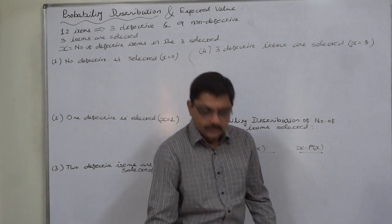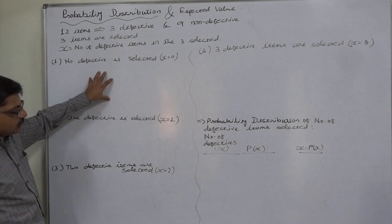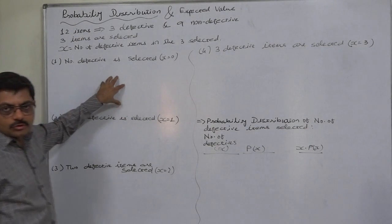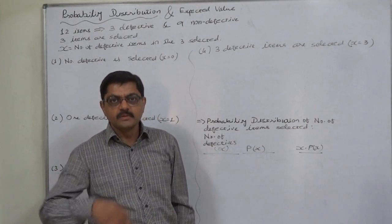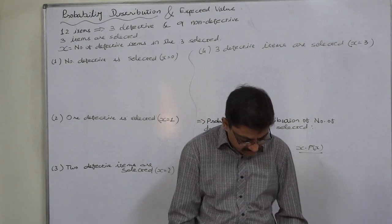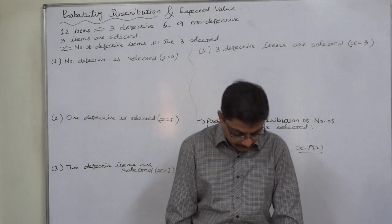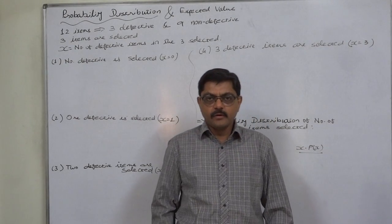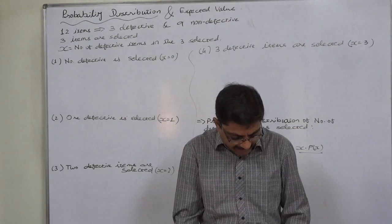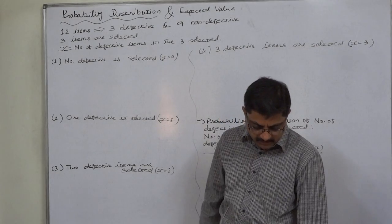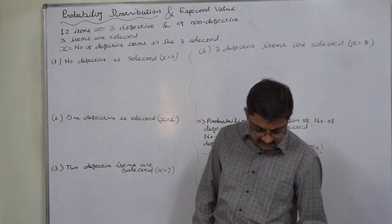Hello and welcome. In this new case, we are going to discuss two points simultaneously: one is to construct a probability distribution of a given case or experiment, and then to find the mathematical expectation or expected value from the probability distribution. The case is: a box contains twelve items of which three are defective. A sample of three items is selected from the box at random, simultaneously. If x represents the number of defective items in the three selected items, describe the random variable x completely and obtain its expectation.